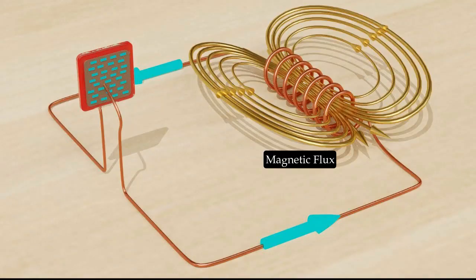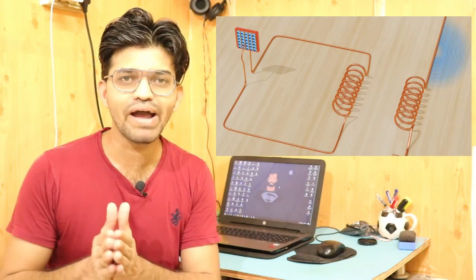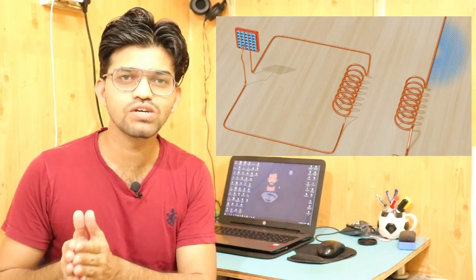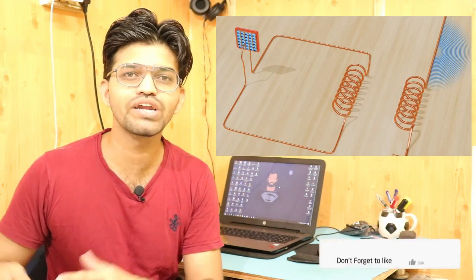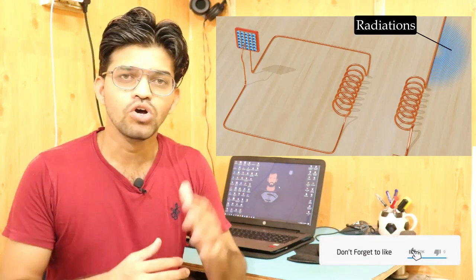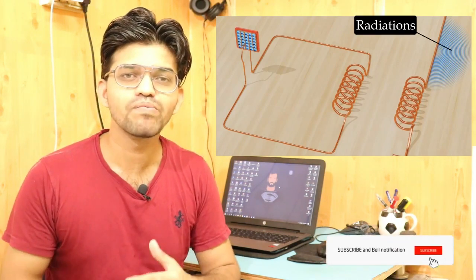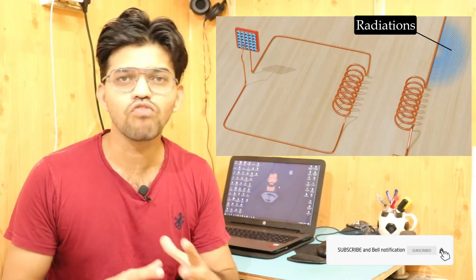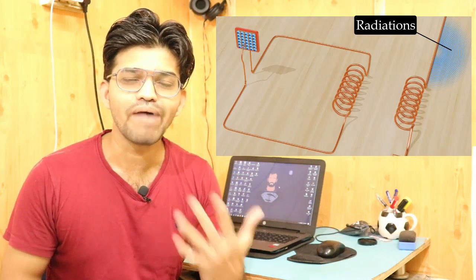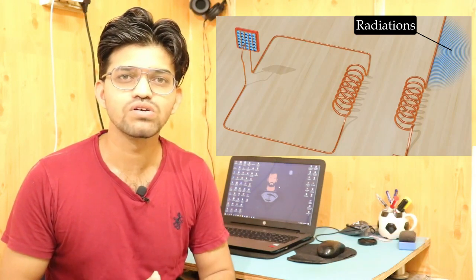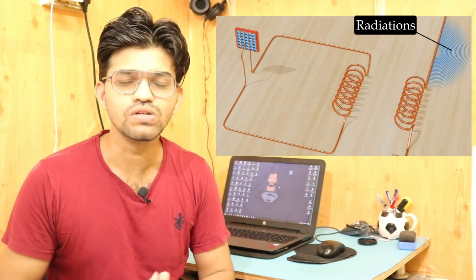If we attach another coil, the magnetic flux gets induced in that second coil and it will produce radiation. That is the basic principle behind the production of magnetic waves and radiation.